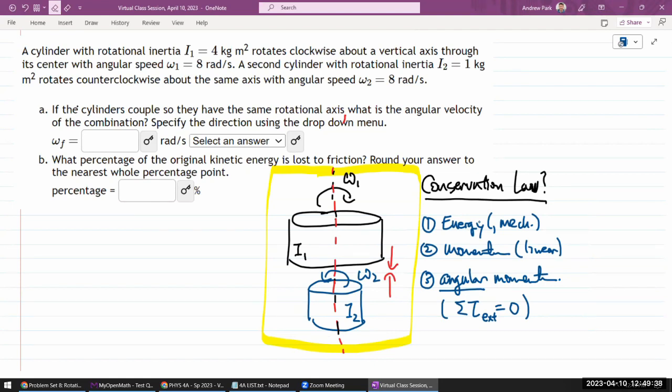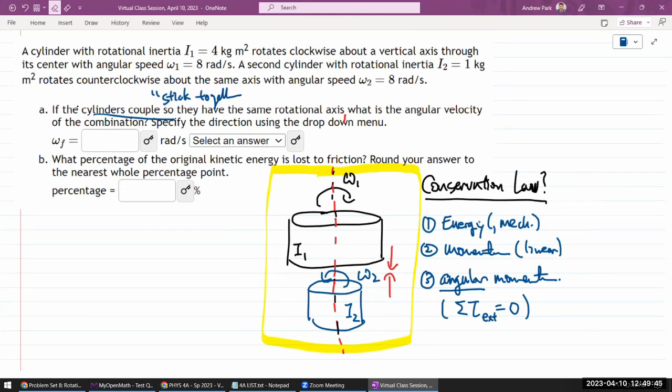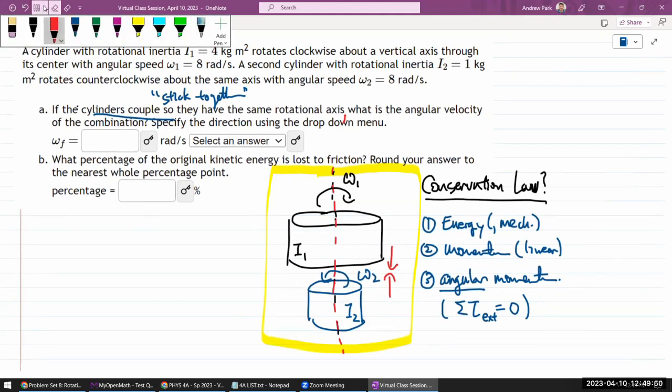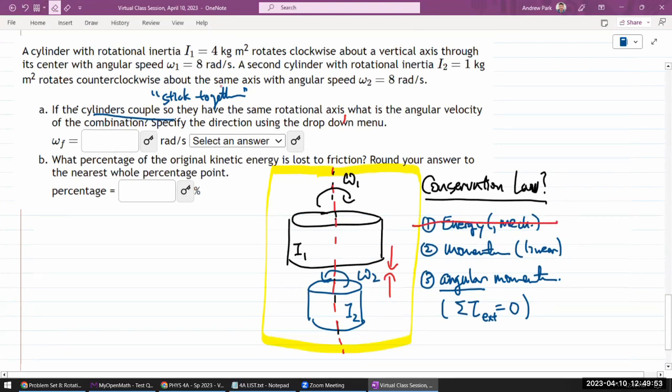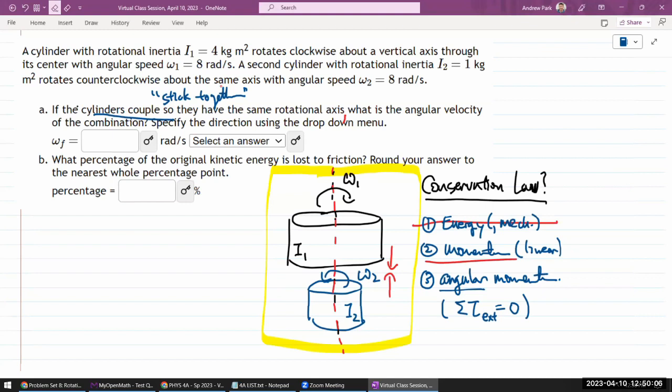I hope you have some sense that if they couple and stick together, that this is not going to be elastic collision. So energy won't be conserved. That's hopefully some intuition that you have by this point after having dealt with many different conservation law questions. And as they couple, I guess their total linear momentum is just zero to start. So this might hold, but it's kind of useless. So what you are holding to is the conservation of total angular momentum.